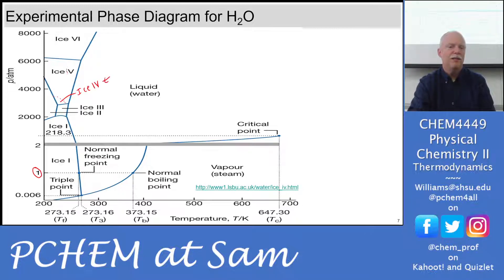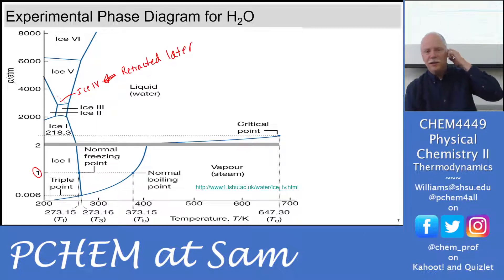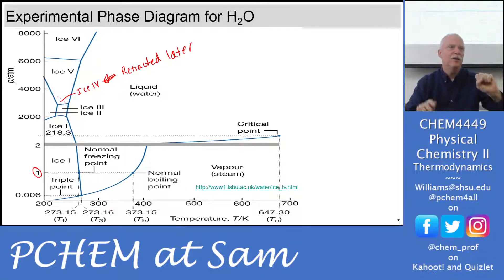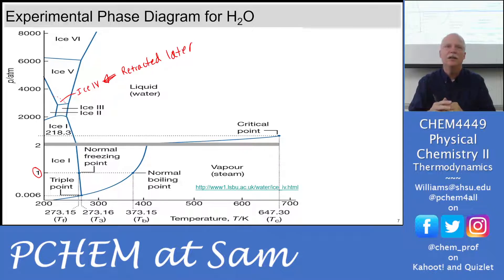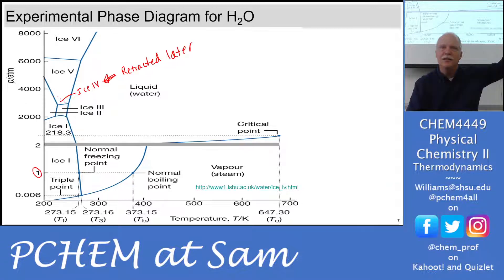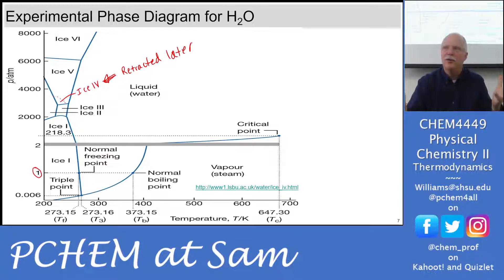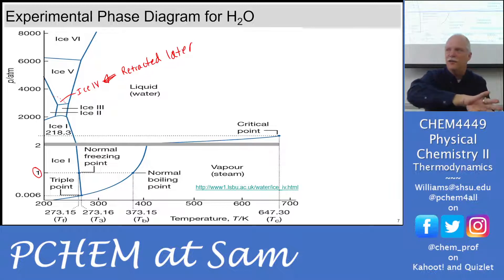They discovered ice II, ice III, ice V, and ice VI. Ice IV was initially identified but later found to be one of the others and retracted. Rather than renaming ice V to IV and ice VI to V — which would cause confusion in the literature — they simply deleted ice IV and kept V and VI with their original labels. This shows that science is a human endeavor: we make mistakes, correct them, and have to decide how to handle those corrections in the literature.